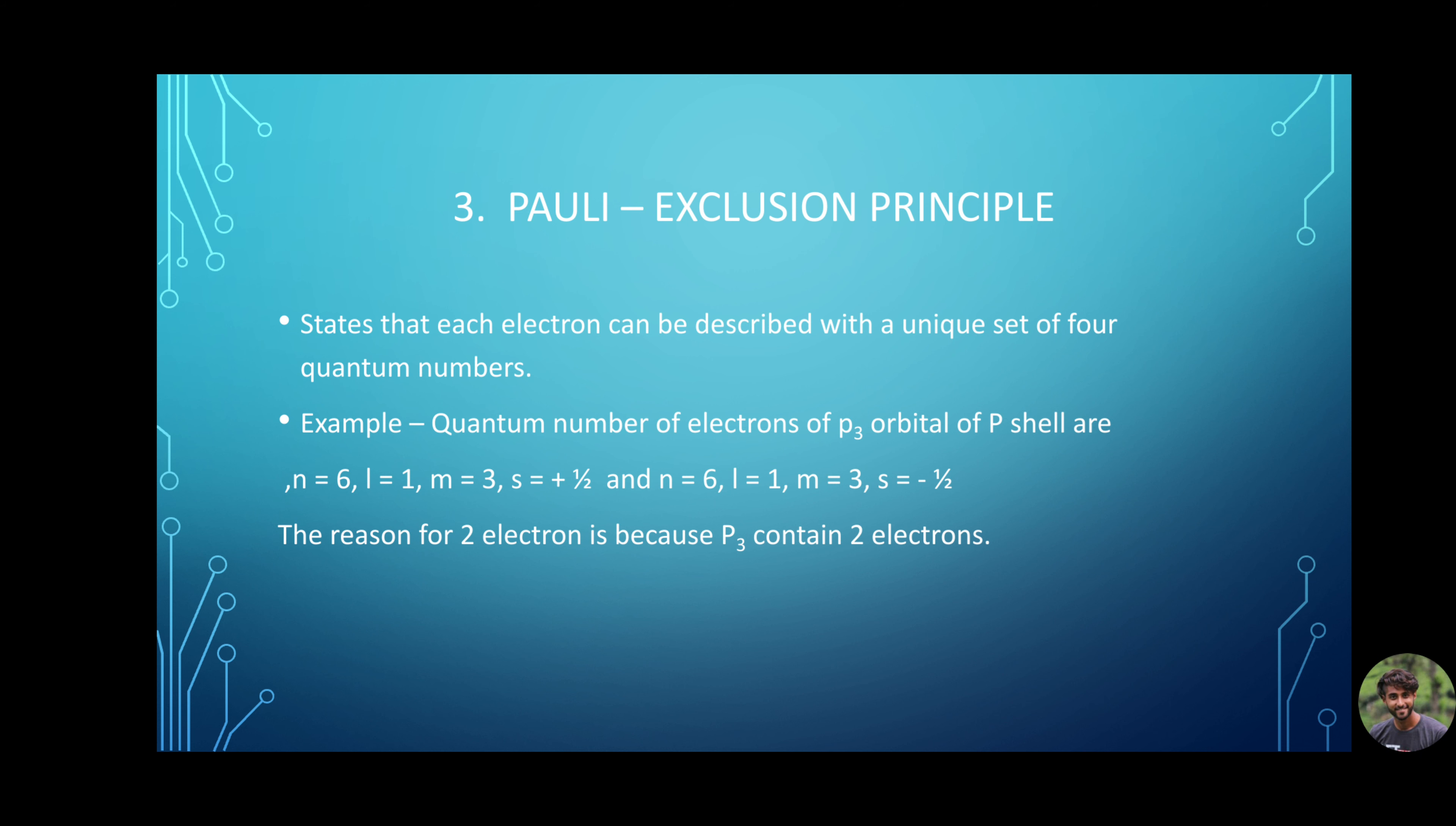Pauli exclusion principle. Pauli exclusion principle states that each electron can be described with a unique set of four quantum numbers. Even though three quantum numbers would be same, the fourth quantum number should be different. Thus, no two electrons in an atom will have four quantum numbers as same. For example, an electron in the p1 orbital of the M shell has quantum number n = 3, l = 1, m = 1 and s = -1/2. As there should be two electrons in an orbital.